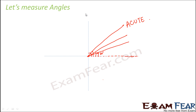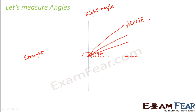The moment you reach 90 degrees, you reach a right angle. So the angle corresponding to 90 degrees is the right angle. Anything more than 90 degrees but less than 180 degrees — and 180 degrees is your straight angle — all those angles which fall between 90 and 180 degrees are referred to as obtuse angles.